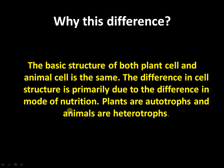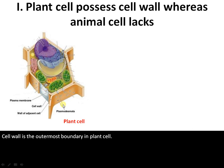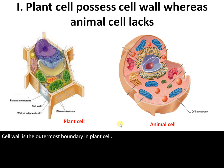Plants are autotrophs whereas animals are heterotrophs. Plants possess a cell wall whereas in animal cells, cell wall is absent. Cell wall is the outermost boundary in the case of plant cells. It is made up of cellulose and it has connections with other cells called plasmodesmata. Whereas in animal cells, the outermost boundary is a plasma membrane and cell wall is absent.